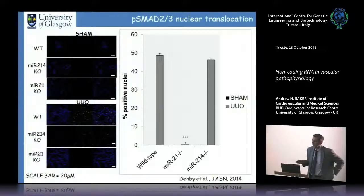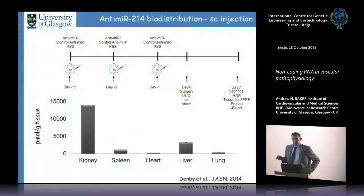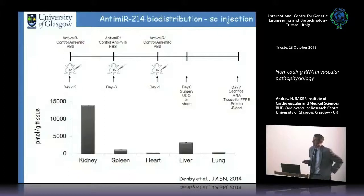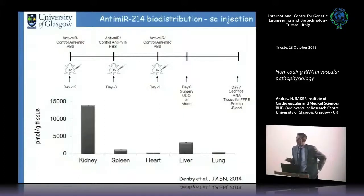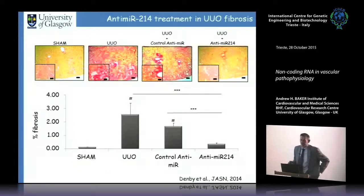Looking at TGF-beta signaling — a hallmark of fibrosis — the anti-fibrotic effect of miR-21 knockout is mediated entirely through TGF-beta/SMAD2/3, blocking SMAD2/3 nuclear translocation. miR-214 knockout has no effect on this pathway — it's a TGF-beta/SMAD2/3-independent mechanism. Anti-mirs against miR-214 home to the kidney: after subcutaneous delivery, the kidney is the main site of sequestration, followed by liver. Switching chemistry can adjust tissue distribution.